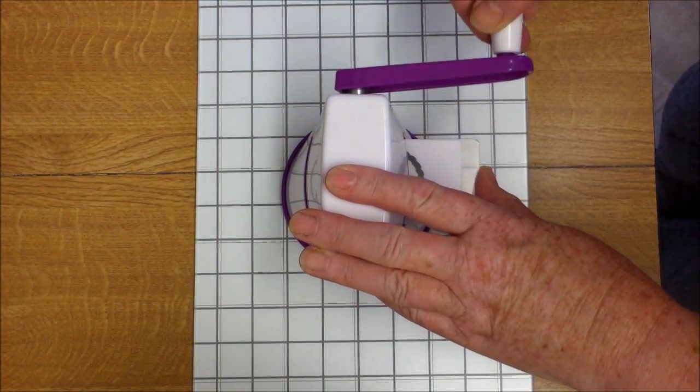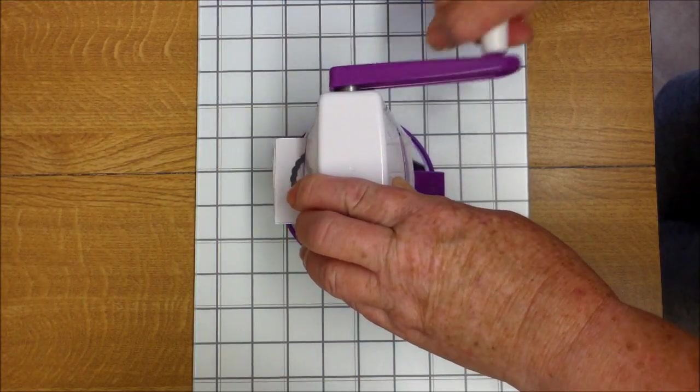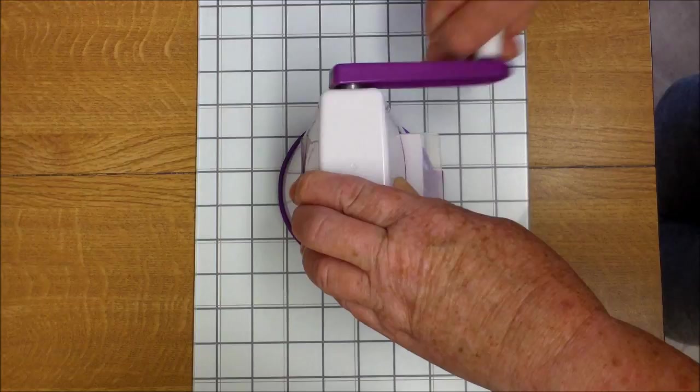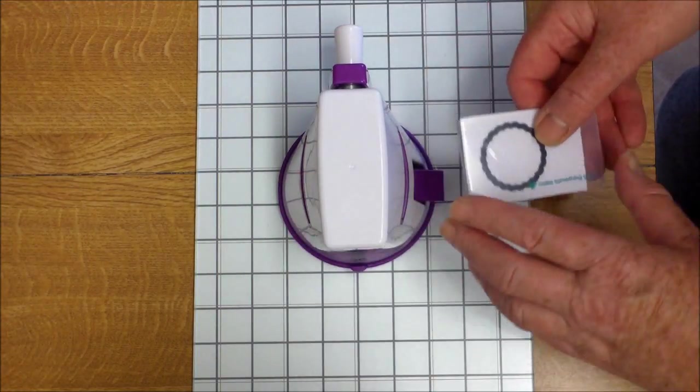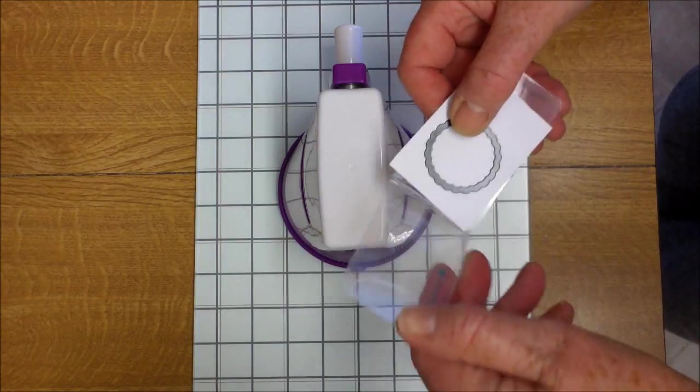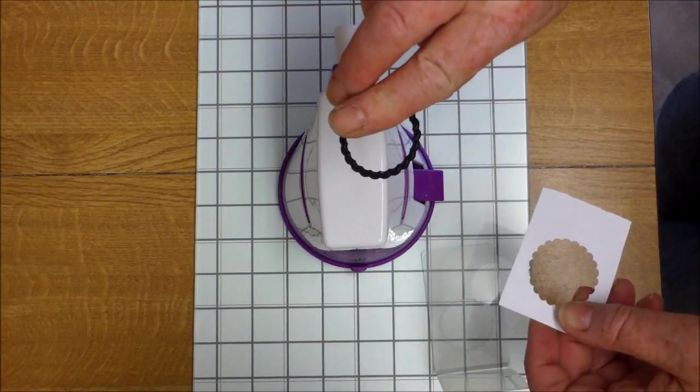Put it in the slot, turn the handle. I do find that the sticker suction on this one isn't as good as the suction on the others. And I always try to run them backwards and forwards through the machine. And there we have it.